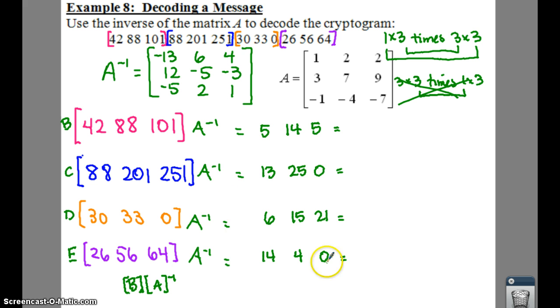So these numbers all correspond to a letter of the alphabet. So let's see what we can get here. Well, 5 is E. 14 is N. And 5 is E again. Then we go down here to the bottom. We have 13, which is M. 25, which is Y. 0 is a space. So we have enemy.